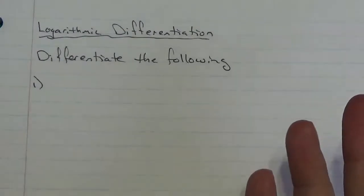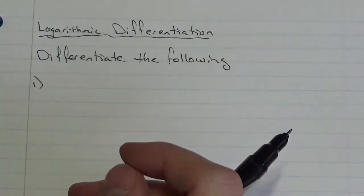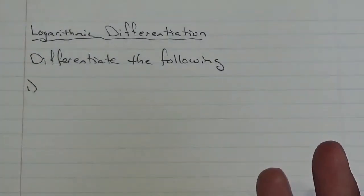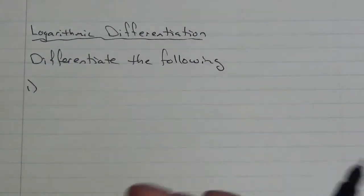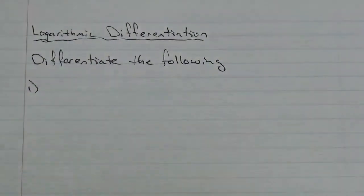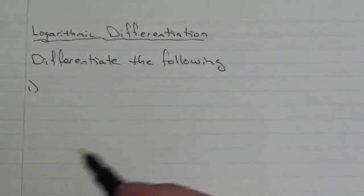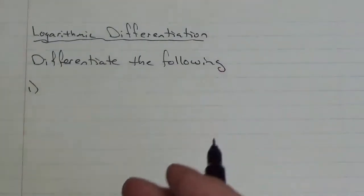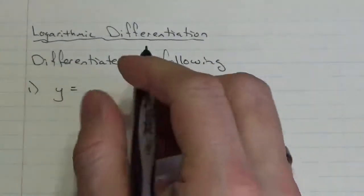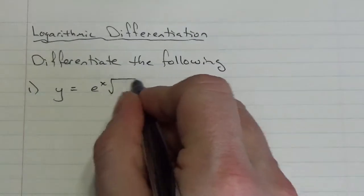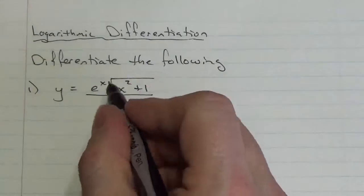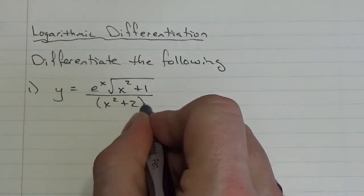So in this lesson, we're going to take a look at using logarithms to help us differentiate expressions that would either be really complicated to take the derivative of, or actually impossible based on rules that we have thus far. I'm just going to show you a handful of examples and jump right in — instead of giving you the theory, I'll just show you what this looks like. So let's take a look at an example: let's say y is equal to e to the x multiplied by the square root of x squared plus 1, over x squared plus 2 cubed.